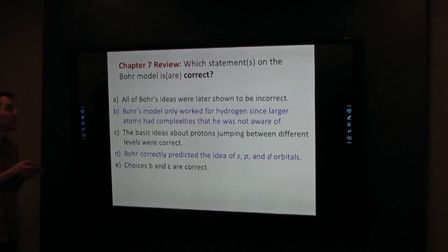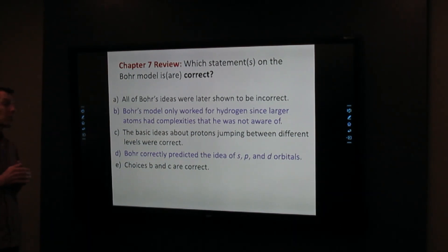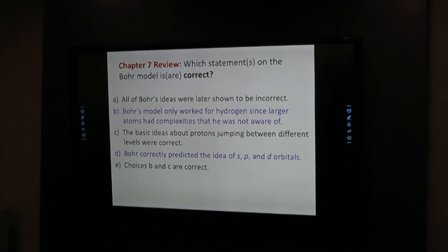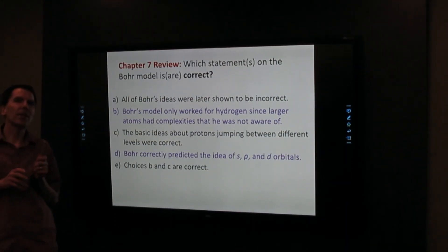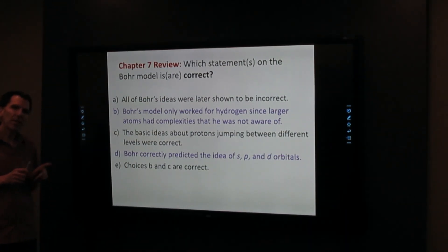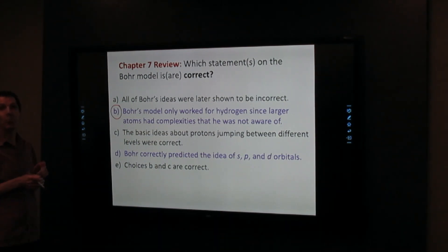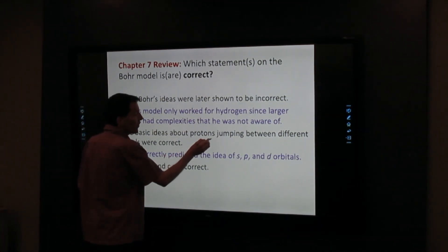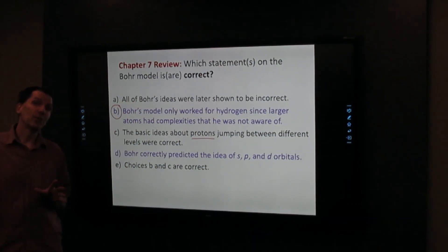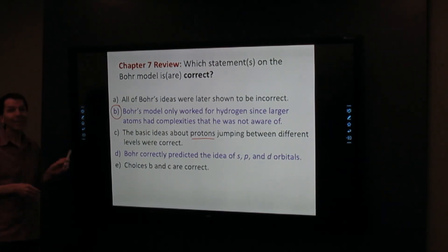Here's a review problem from the end of Chapter 7. Which statement on the Bohr model is correct? This is the kind of question that you have to read very carefully because I think it's easy to choose choice E. But the answer to this is only choice B. Choice C is incorrect because it says protons, not electrons. Protons don't jump around atoms, they stay in the nucleus.